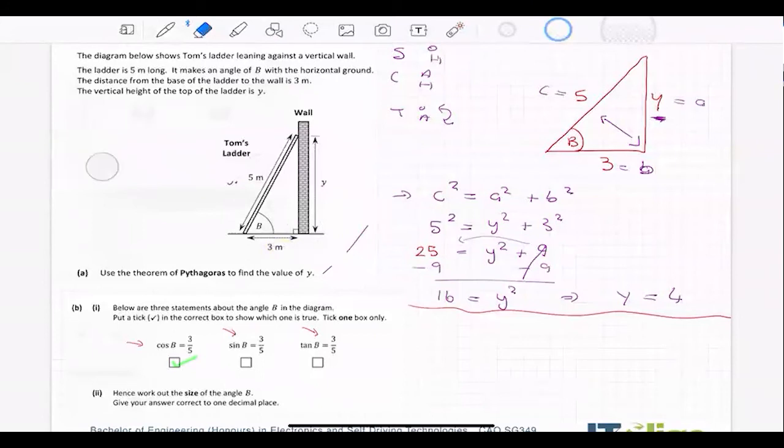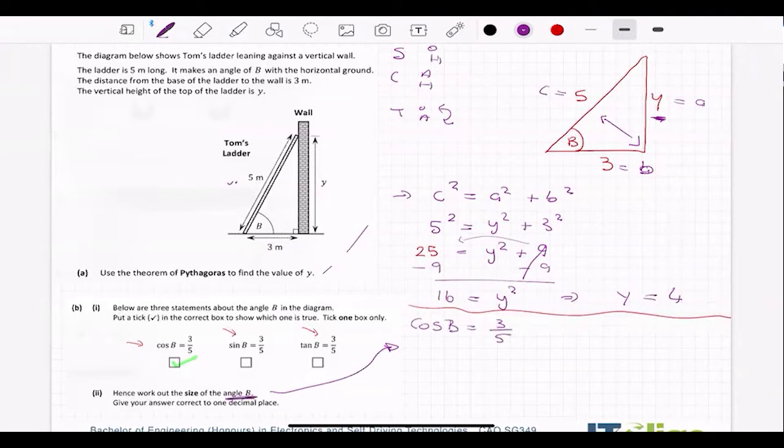So now we've worked out cos B is equal to three over five. And then the question said, hence, work out the size of the angle B. So I would have had cos B been equal to three over five. I need to know the angle B. Not cos of B, but just B the angle. So I just want B the angle. So the opposite of cos is cos inverse. So do you remember up here, to go from y squared to y, we did the opposite of squared, which was square root. Well, down here, we do the opposite of cos, which is cos inverse. And we get the cos inverse of both sides.